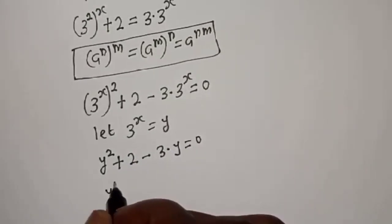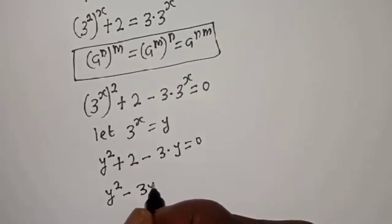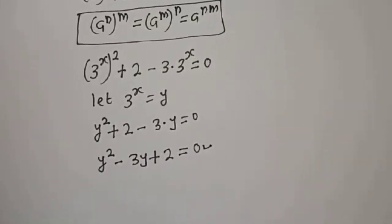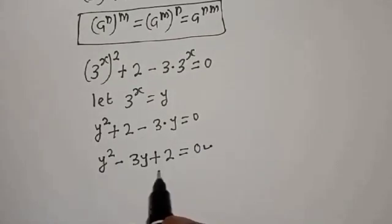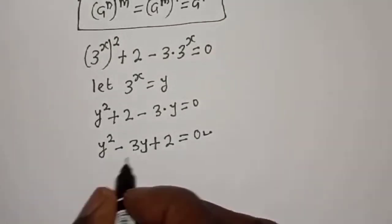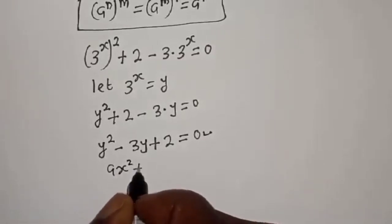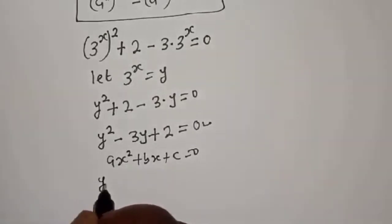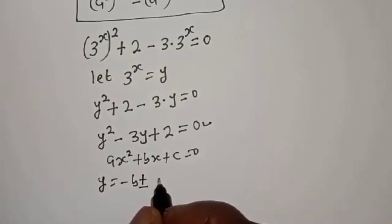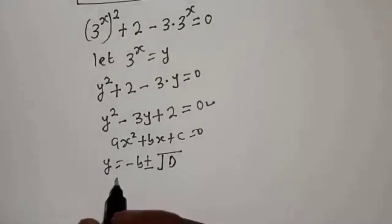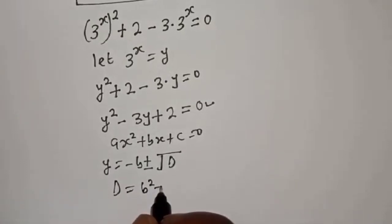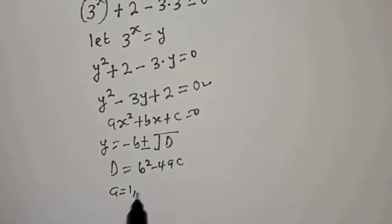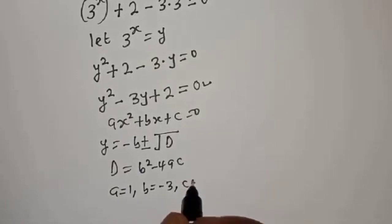Then we have y squared minus 3y plus 2 is equal to 0. This is a quadratic equation which can be solved using the quadratic formula or factorization. From the quadratic formula, for ay squared plus by plus c equals 0, we have y equal to negative b plus or minus square root of the discriminant d, where d is equal to b squared minus 4ac. From this equation, a is equal to 1, b is equal to negative 3, c is equal to 2.